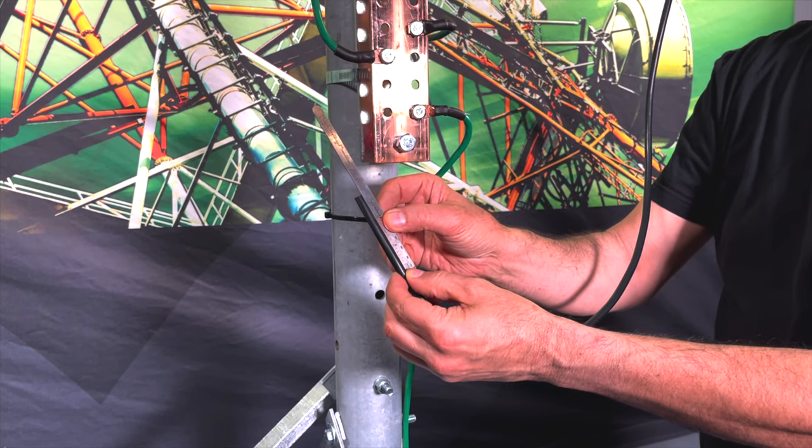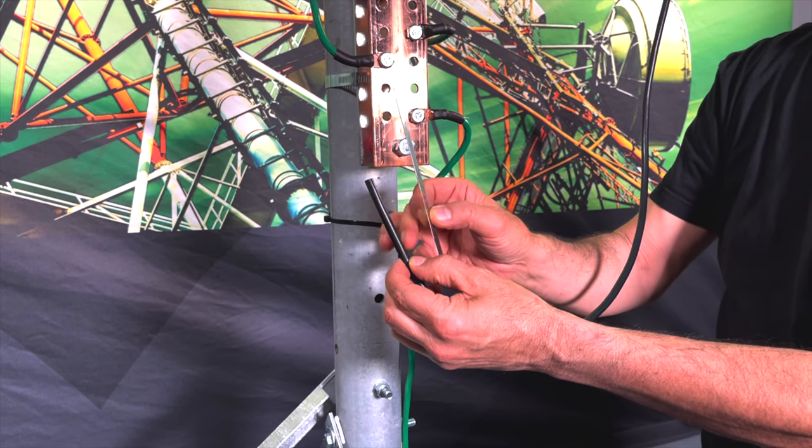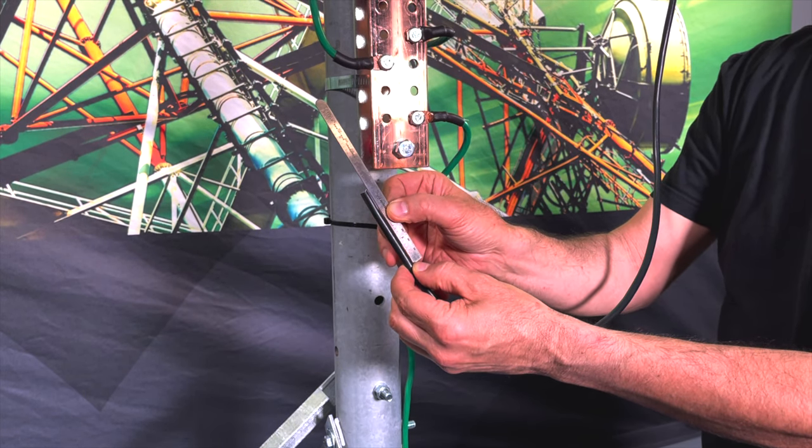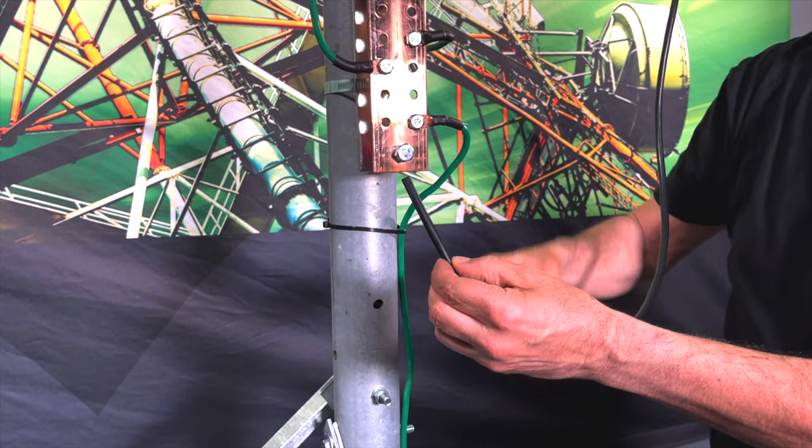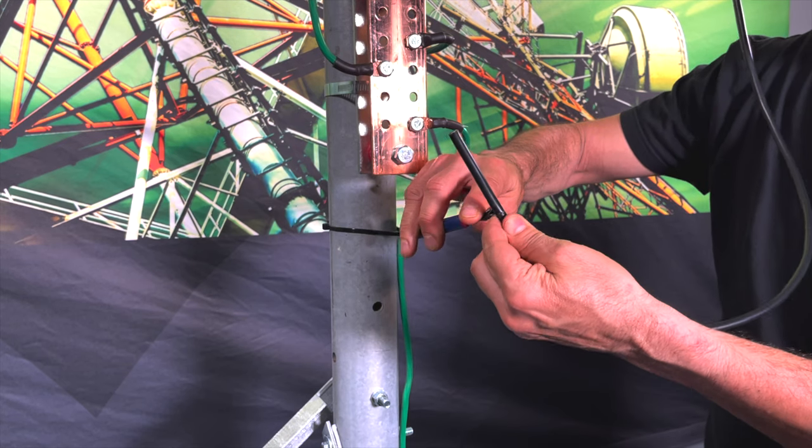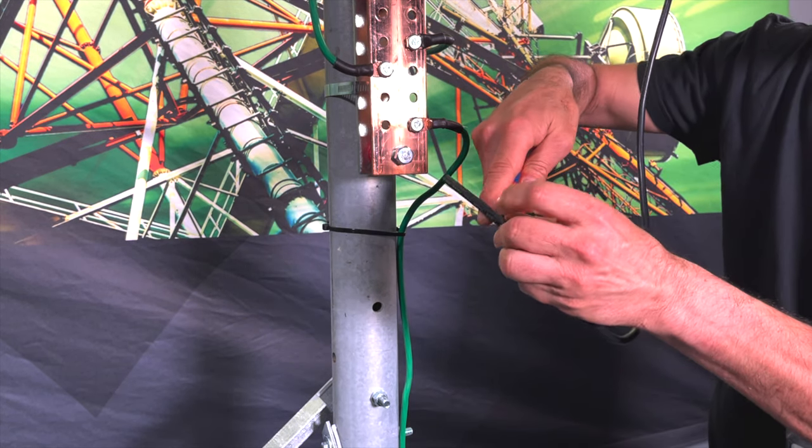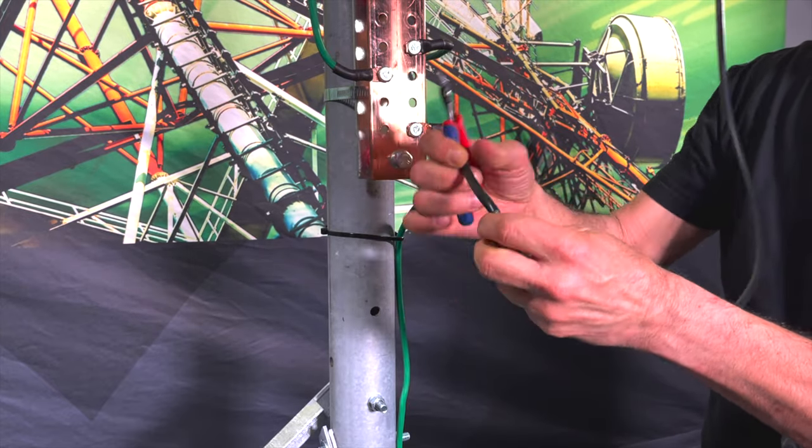The first step is to strip back three inches of insulation, this black jacket, from our DC power wire. I've got out my ruler, and I've measured back three inches. When you score it around here, you just want to cut the outer jacket. Bend this a few times, and that will expose the inner braid.